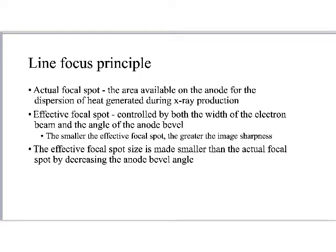I will repeat that because that's a big takeaway from this section. But first, let's talk about this line focus principle. Some of the terminologies we need to be aware of is that there is an actual focal spot. The actual focal spot is an area available on the anode for the dispersion of heat generated during x-ray production. It's the area that the electrons are focused on on the anode in order to produce x-rays. Sometimes technologists will talk about, or on the test they'll talk about, the focal tract.